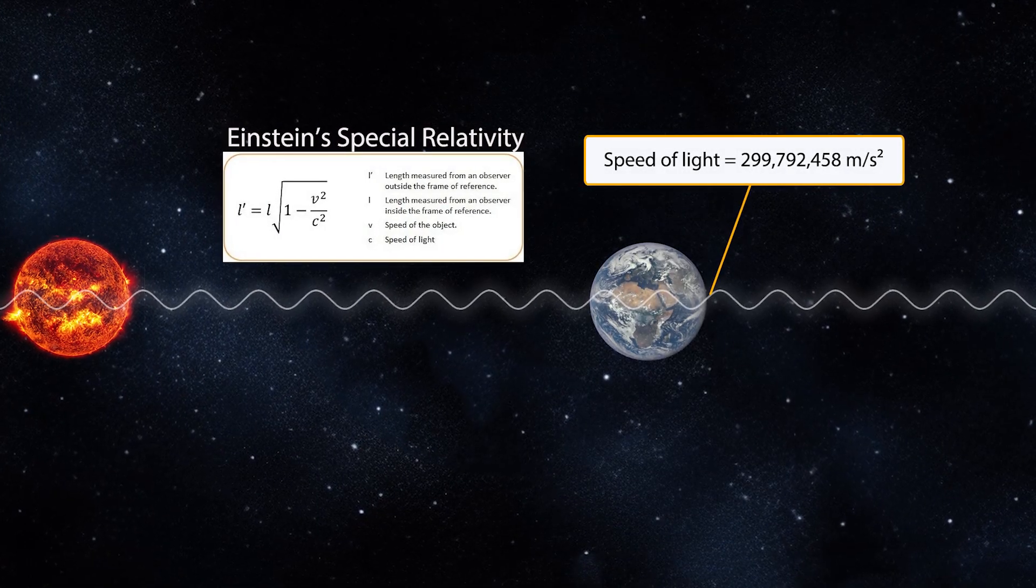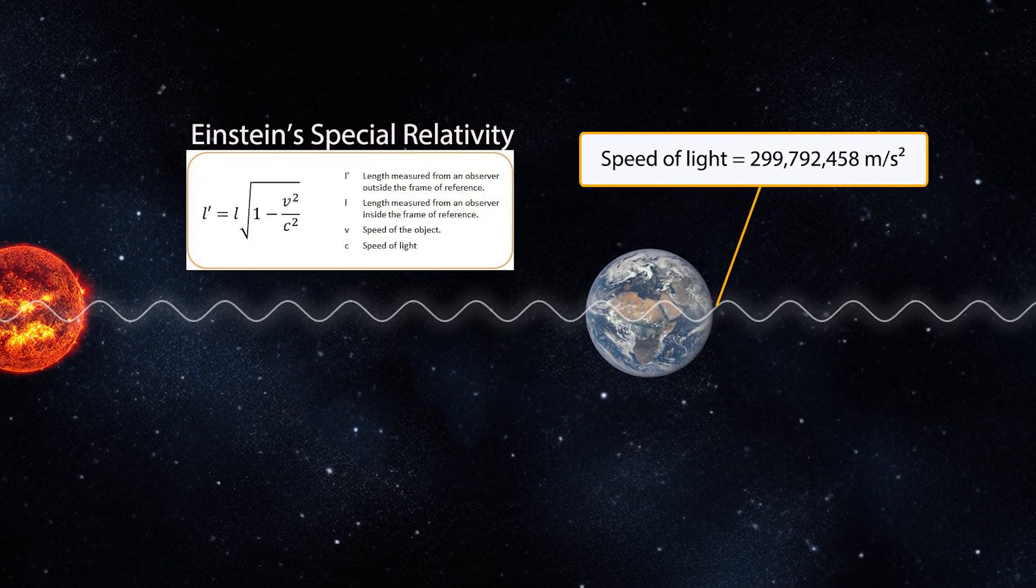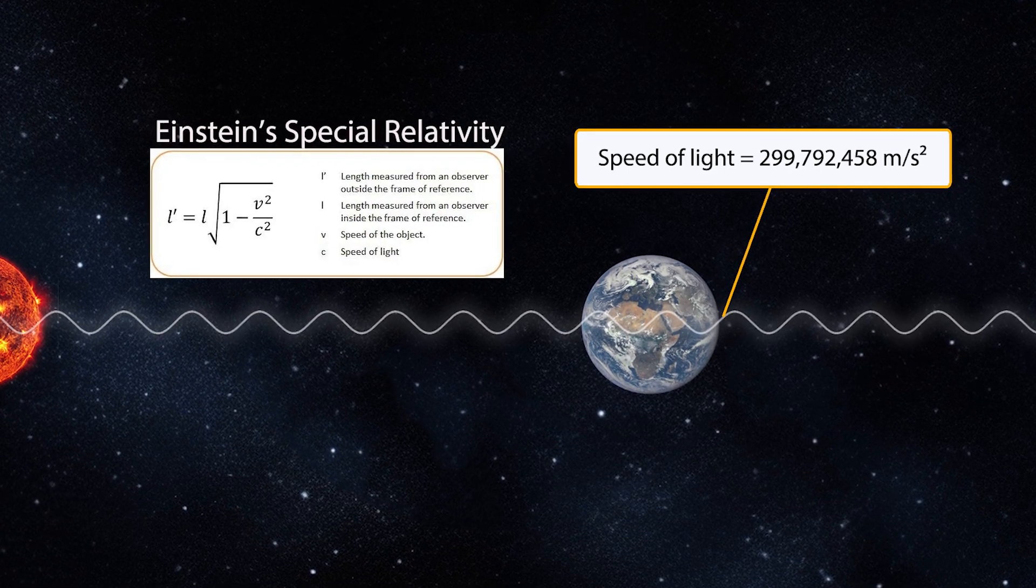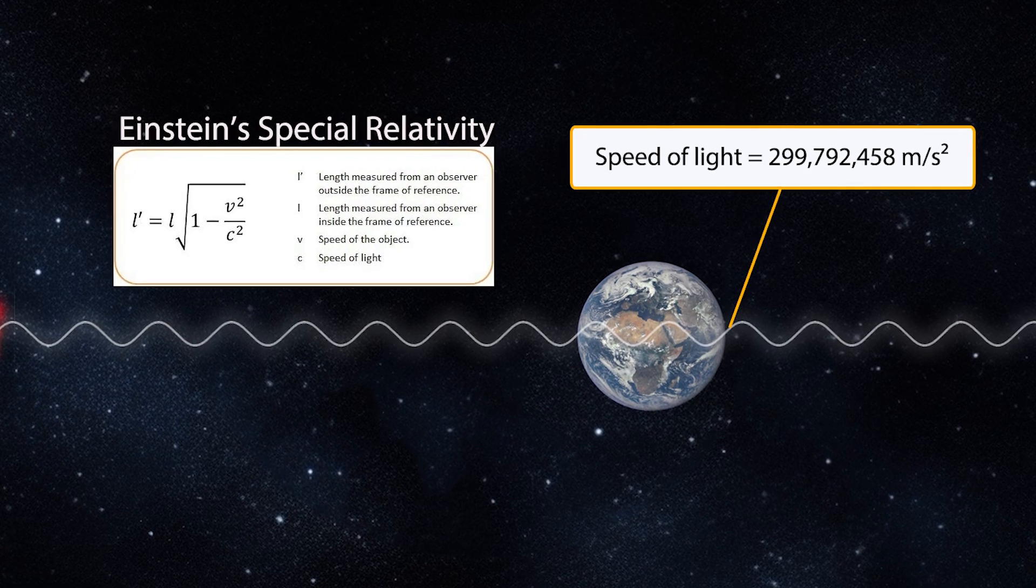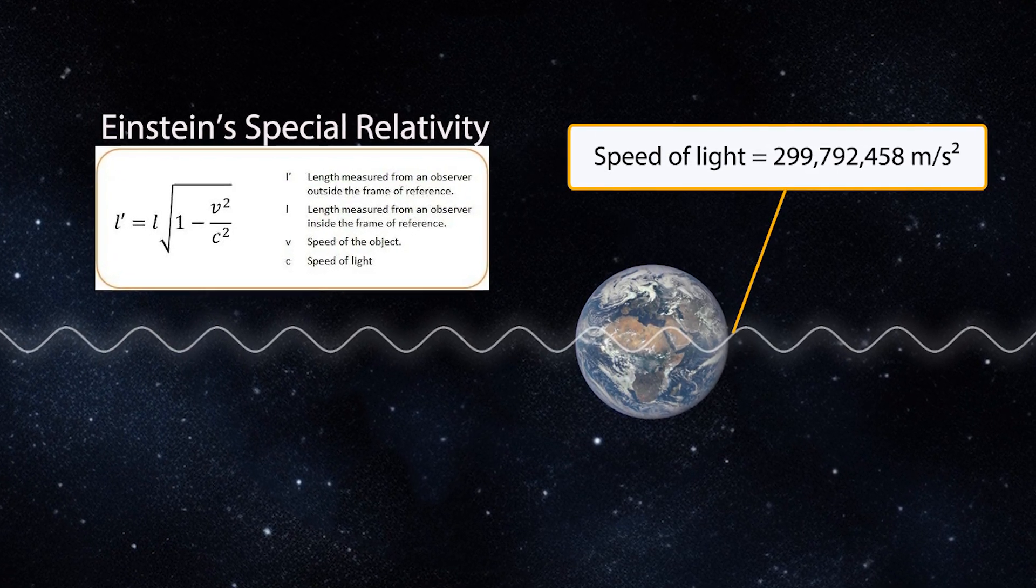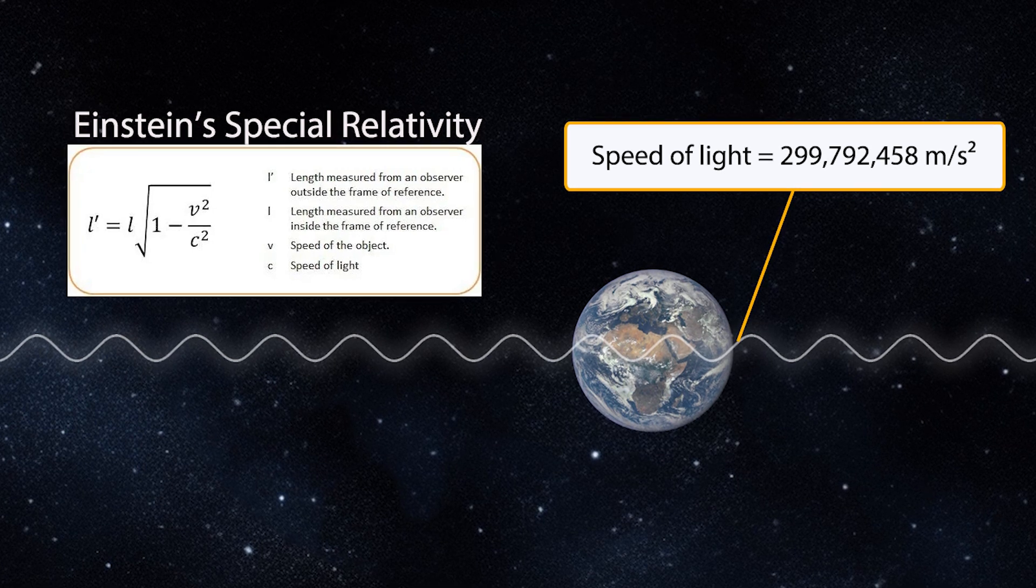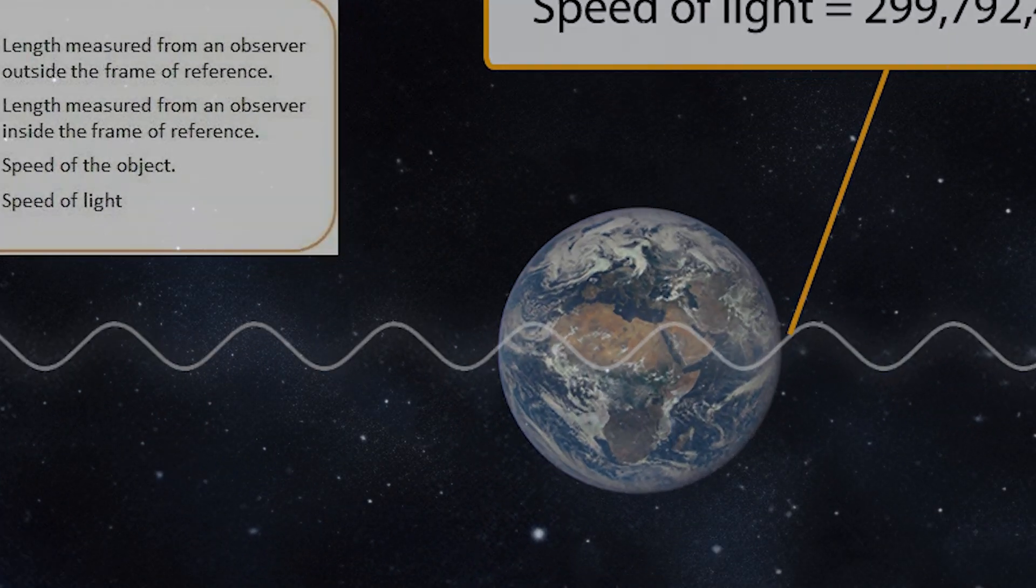Einstein predicted that the speed of light in a vacuum would travel at the same speed regardless of the speed or direction of the light source. He continued to deduce that if the speed of light is constant, then the perception of time from an observer would be different than a traveler traveling near the speed of light. This time dilation also applies to the measurement of time at different altitudes and direction of flight, as this has been tested and proven with atomic clocks.